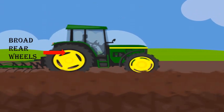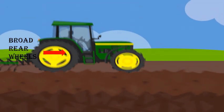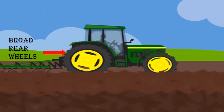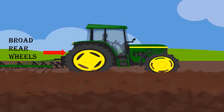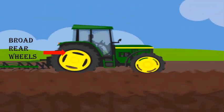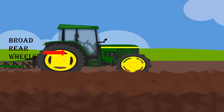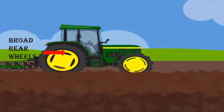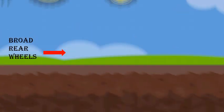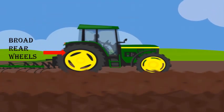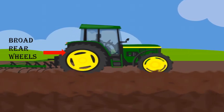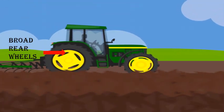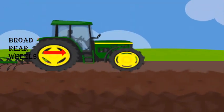Similarly, the rear wheels of tractors are made very wide as tractors are supposed to work on soft ground. Small wheels can sink in the soft ground. However, the broad tyres decrease the pressure on the ground and help the tractor to move in the fields easily.